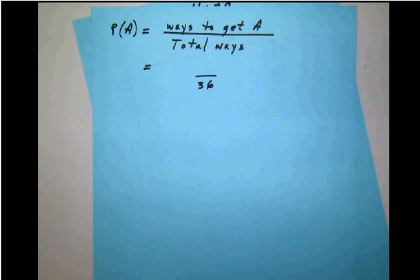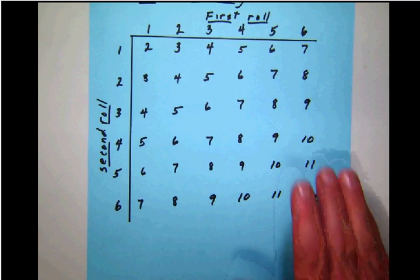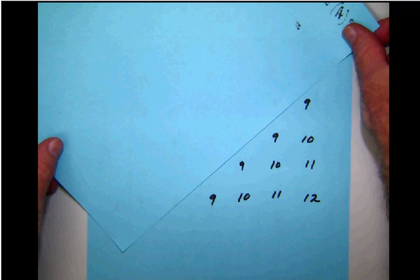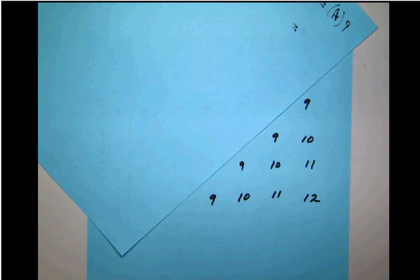Now the first thing that they're going to ask us for Event A is the sum is greater than 8. So we go back here and look at our chart, and they say the sum is greater than 8. Well, that means that it could be 9, 10, 11, or 12. So it could only be these possibilities. It's got to be greater than 8—it doesn't include 8—so it's got to be just these possibilities.